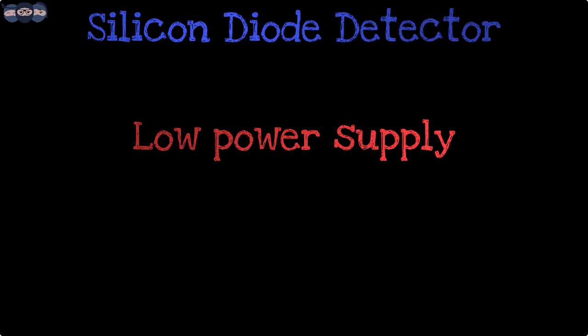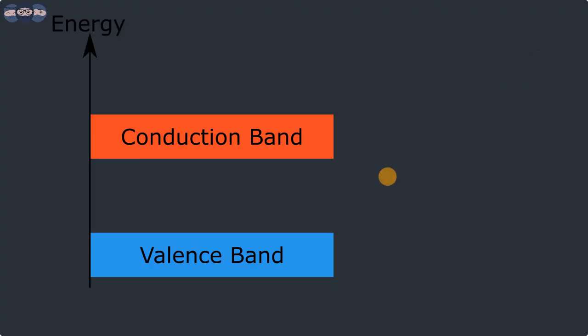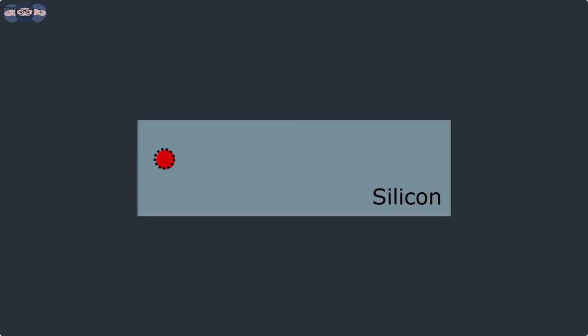The next detector is the silicon diode detector. The advantage of a silicon diode detector is low power supply, and the signal from the diode can be easily amplified using a low noise op-amp. When a photon strikes a semiconductor, it promotes an electron from the valence band to the conduction band. This creates an electron-hole pair.